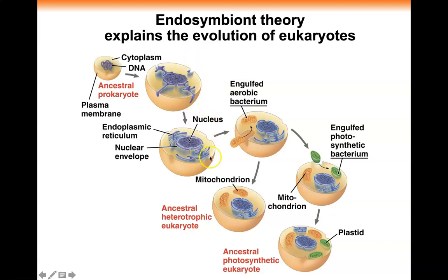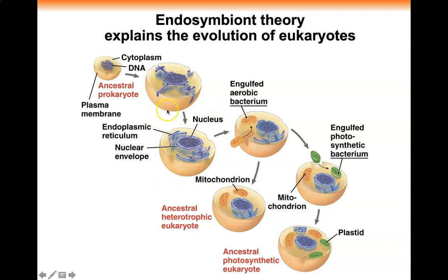Some of that membrane invaginates and forms folds to form the endoplasmic reticulum, which is a key part of the endomembrane system. The endomembrane system, the endoplasmic reticulum, and the nuclear envelope all arose from invagination of the membrane. Then you've got the nucleus that's formed — we can call this cell a proto-eukaryote. Proto kind of means 'before' — before you've got your formal eukaryote.